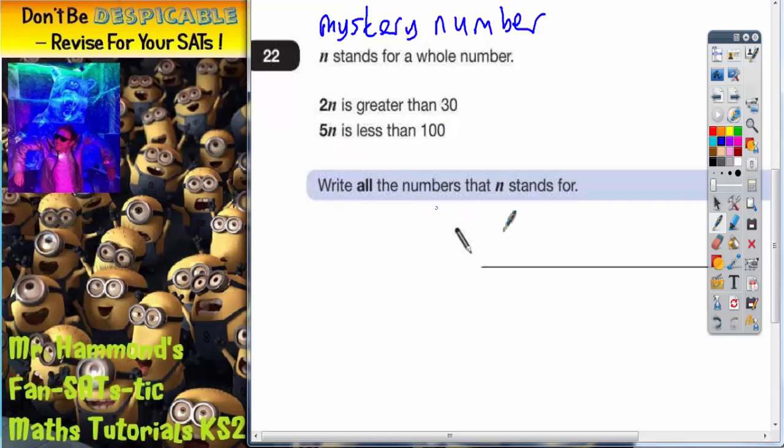We've got to write all the numbers that N could stand for. To make this a bit easier, I'm going to replace the greater than with an equals and replace the less than with an equals. Now let's look at these statements and see how much easier it is.